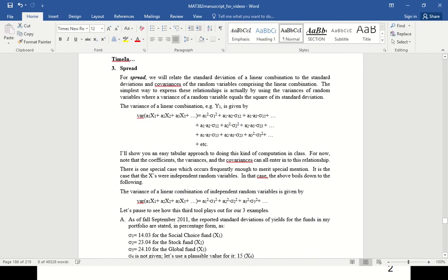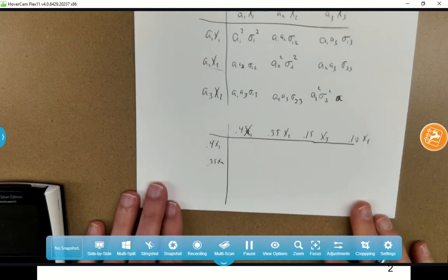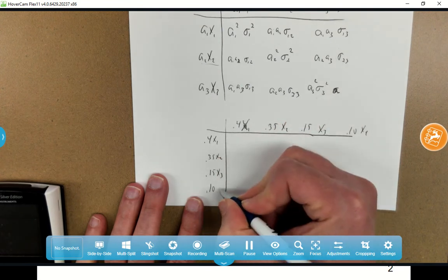The social choice fund gives us the standard deviations and the correlations between the two, and also the distribution of our assets. What I'm going to have then is I put 40% into the first one, 35% in the second one, 15% in the third one, and 10% in the fourth one. So 0.4 X1, 0.35 X2, 0.15 X3, and 0.1 X4.